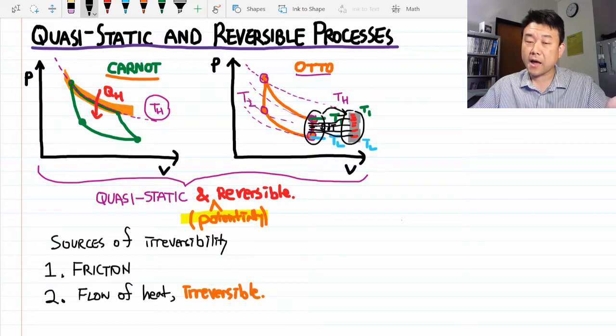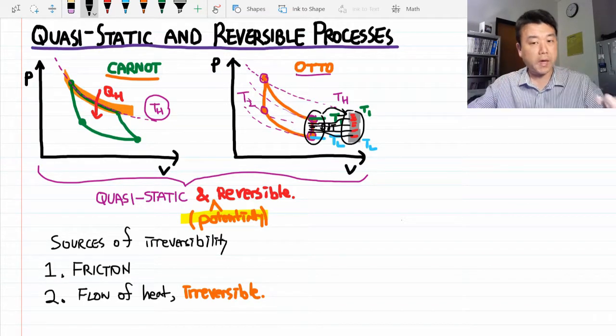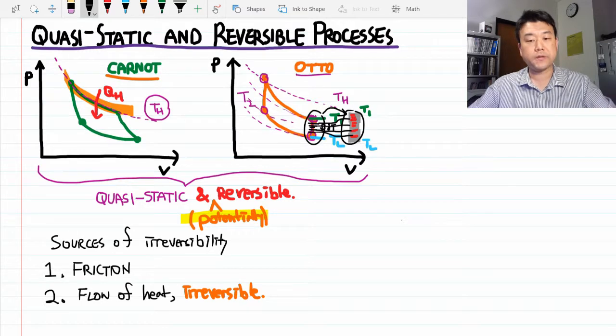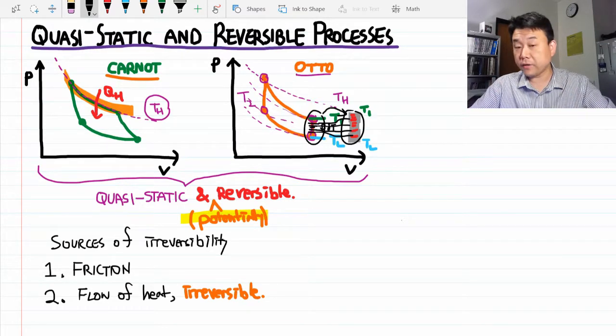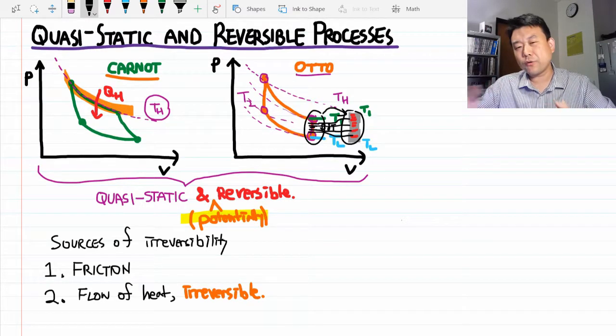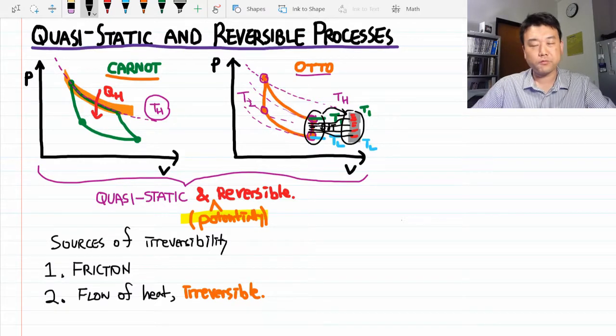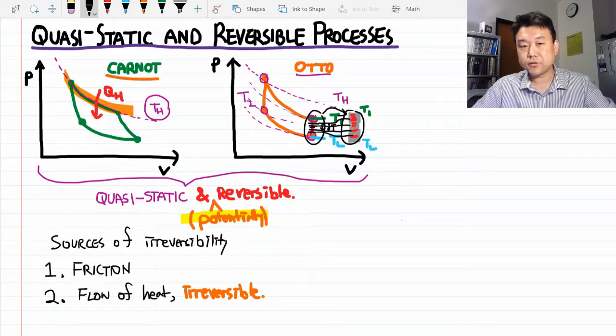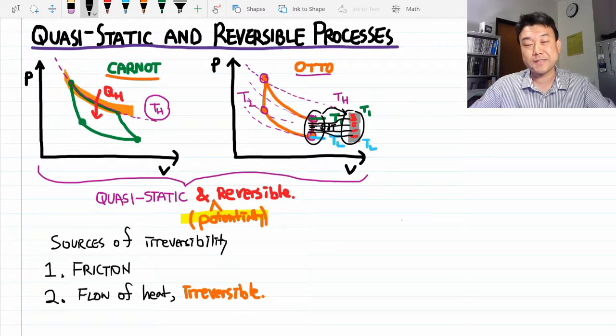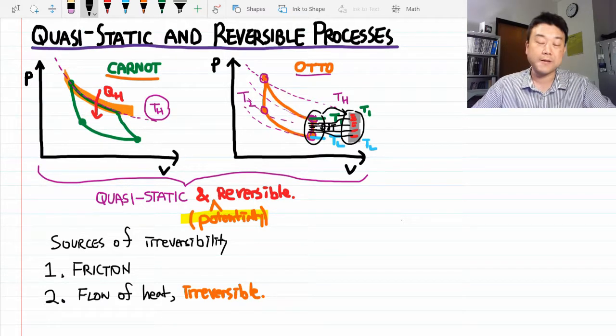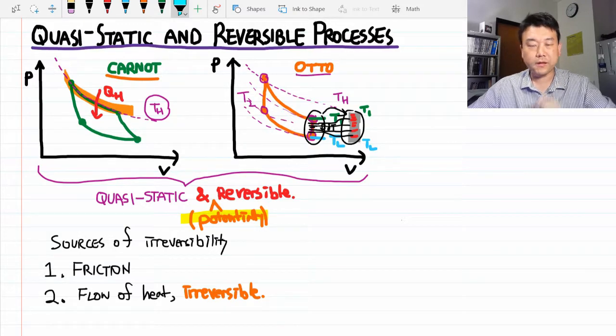And from time to time, we will bring up, okay, how would this be different if this process were irreversible? But we are not going to get very numerical with it. We'll just give you some inequality that tells you how the reversible process is better than the irreversible process. And this practice is justified on really two grounds.